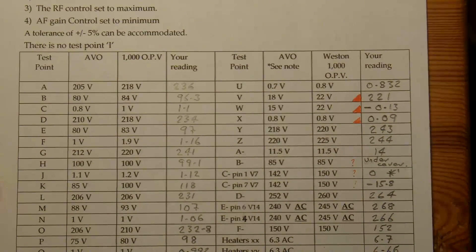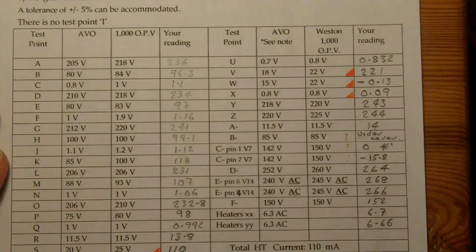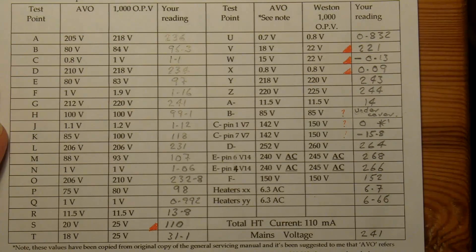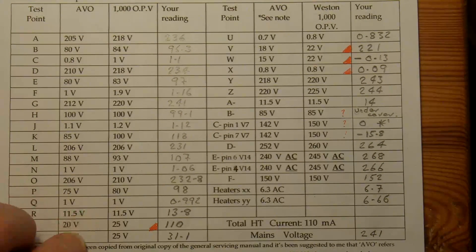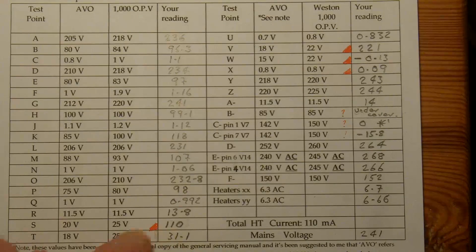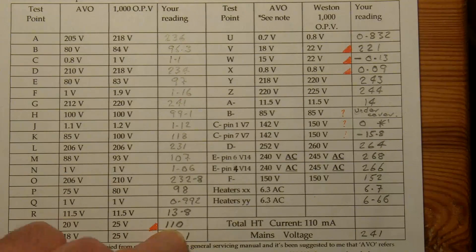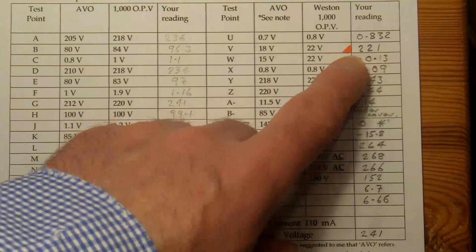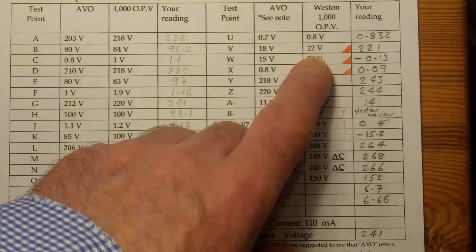Well, I've just taken a list of readings. And some of them are really way out of line. And you'll see here on position S it should be 25 volts or thereabouts, and I'm getting 110. And over here I'm getting 221 volts where I should be getting 22.